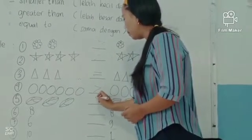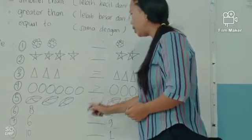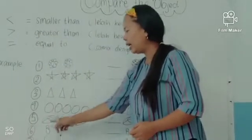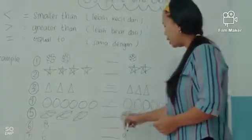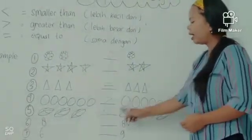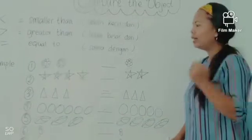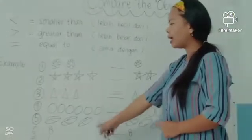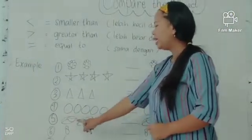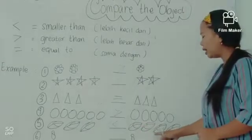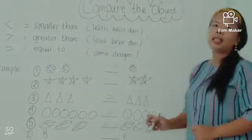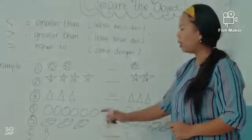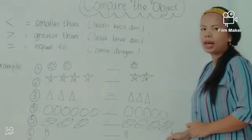You can make the symbol smaller than. Daun yang ada di sebelah kiri ada tiga, sedangkan daun yang ada di sebelah kanan ada empat. Tiga itu lebih sedikit dari empat — smaller than, atau lebih kecil dari empat.